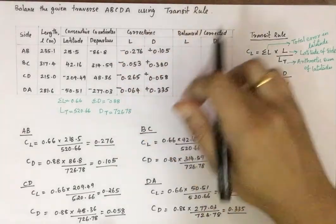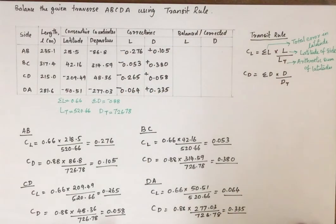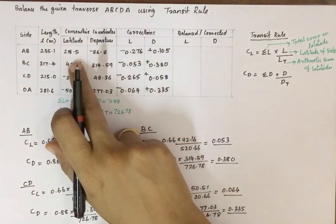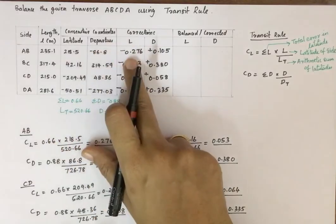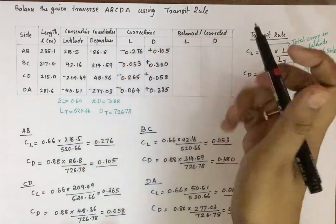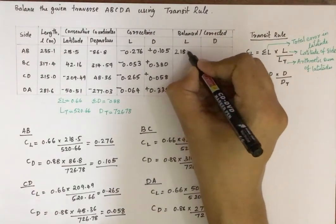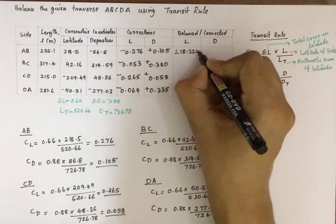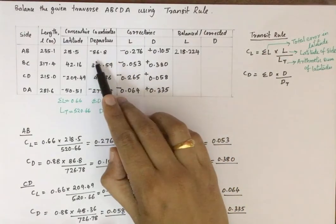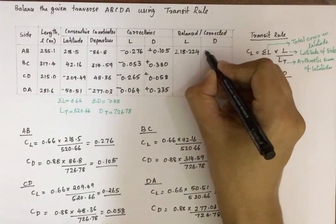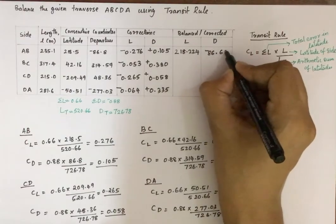Now that we have corrections for all latitudes and departures using the Transit Rule, we can find the balanced or corrected values. For AB: original latitude 218.5 minus correction 0.276 gives balanced latitude 218.224. The departure is −86.8 plus correction 0.105, giving balanced departure −86.695.